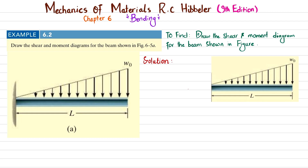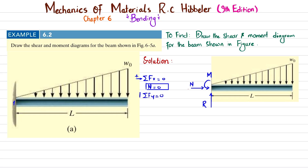We start the solution by removing the fixed support at the end. When you remove it, you will have a reaction force R, a moment M, and a normal load N. We will find R, N, and M using the equations of equilibrium. The first equation is that the sum of all forces along the x-direction equals zero, with rightward forces taken as positive — so N equals zero.